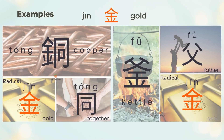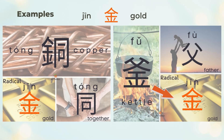铜 means copper. 铜 is the left 金 (metal) and the right 同 (together). 同 is the phonetic of 铜. 釜 is a kettle made of metal used for cooking. 釜 is the top 父 (father) and the bottom 金 (metal). 父 is the phonetic of 釜.